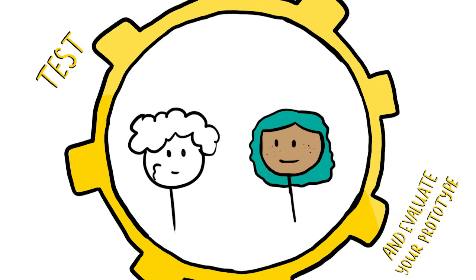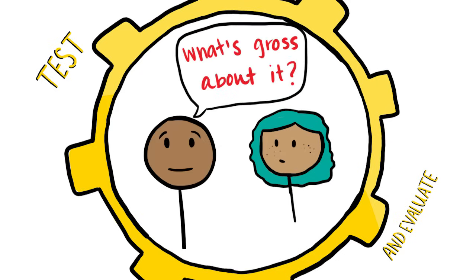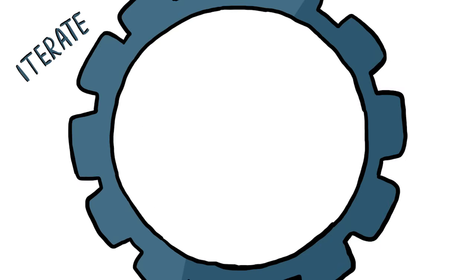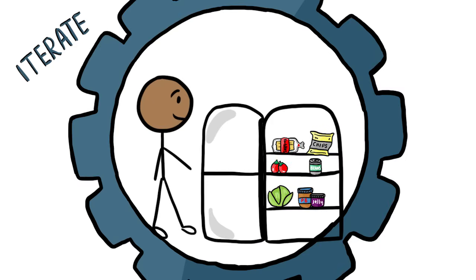You test it out and take a bite — it's gross. You get others to test it, like your roommates or family, and everyone agrees it's gross. You ask questions to determine what's gross about it. Your testers like the tortillas but not the PB&J, so you go back to the kitchen and reassess. This is what engineers call iterating.